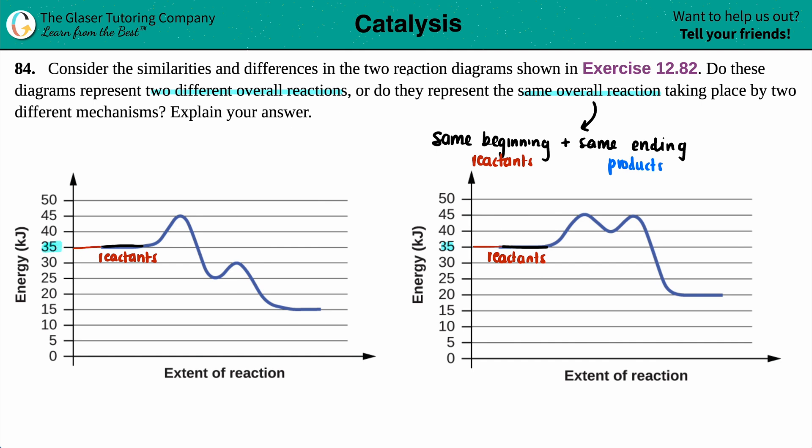So for that part, seems like everything's good. The reactants have 35 kilojoules for the left one and 35 kilojoules for the right one.